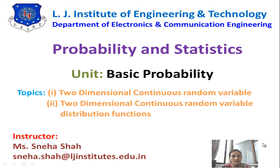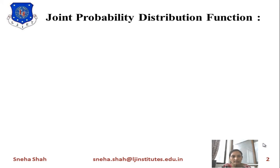In the last session I explained two-dimensional discrete random variables. As you know, two-dimensional means we take coordinates in terms of x and y. For discrete random variables, the meaning of discrete is a countably infinite or finite number. Now we need to take an infinite number of variables, so we use continuous random variables. Since we cannot add all terms infinitely, we will take integration. All equations look like discrete random variable equations — the only difference is that instead of summation, we take integration. The first topic is joint probability distribution function.